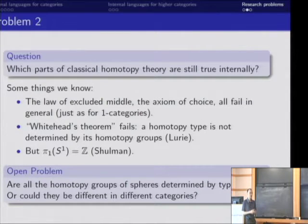So this obviously suggests a lot of generalizations. What about all the higher homotopy groups of higher spheres and other sorts of spaces? Given the way to define these things, how can we compute them? Are they actually determined by type theory? Or might it be the case that in different internal worlds of mathematics, the homotopy groups of spheres are different? I don't know. It would be lovely to answer this question. And Guillaume and some other people are already working on this.